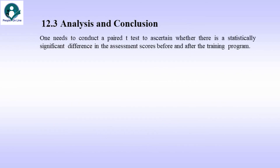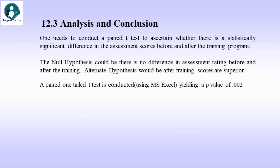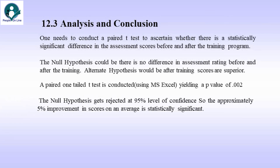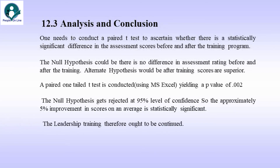One needs to conduct a paired t-test to ascertain whether there is a statistically significant difference in the assessment scores before and after the training program. The null hypothesis is that there is no difference in assessment rating before and after the training. The alternate hypothesis is that after-training scores are superior. A paired one-tail t-test is conducted using MS Excel and it yielded a p-value of 0.002. The null hypothesis is then rejected at a 95% level of confidence. So, the approximately 5% improvement in scores on average is statistically significant. The leadership training therefore ought to be continued.